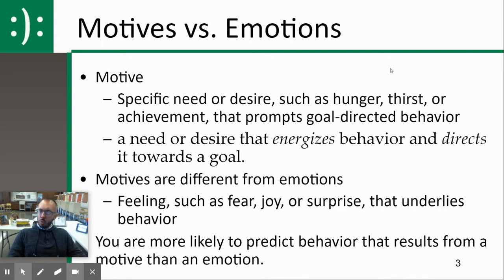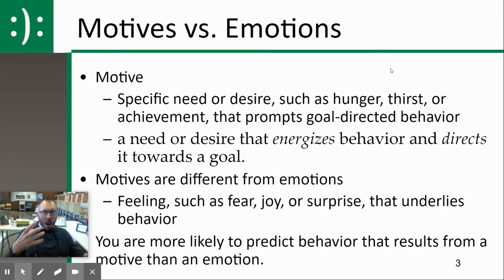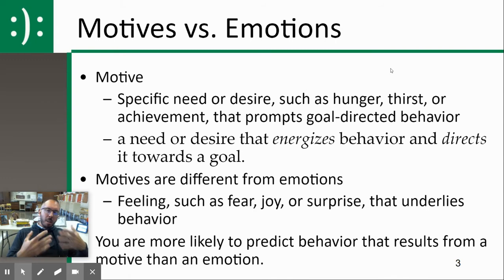My goal-directed behavior would be to go get a drink of water — I'm thirsty, you go get water. Emotions though are different. I might be sad, so I might go watch a movie, cry alone in my room, or listen to sad playlists. There are a lot of different things that might happen. So motives are much more clear-cut: you have a desire, a need, you go fulfill it. Emotions are more murky — we'll get to those next week.